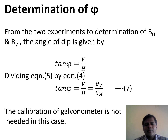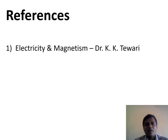To find the value of psi, we need not calibrate the galvanometer, but calibration is required when finding the values of BH and BV. The content of this presentation is taken from the book Electricity and Magnetism written by Dr. K.K. Tiwari.